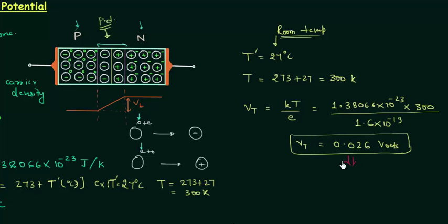So the barrier potential or built-in potential is 0.757 volts for this silicon PN junction at room temperature. In coming presentations I will use: barrier potential for silicon = 0.7 volts, and barrier potential for germanium = 0.3 volts. This is very important and we will use this a lot. These values are calculated at room temperature.